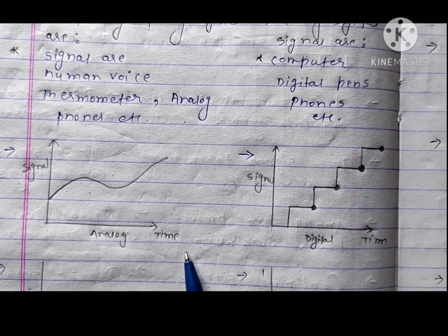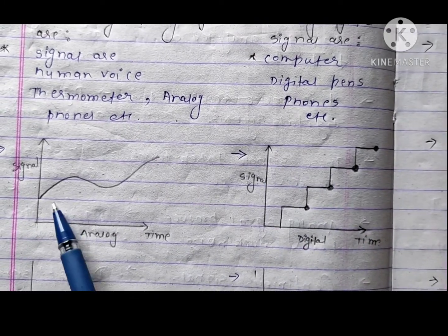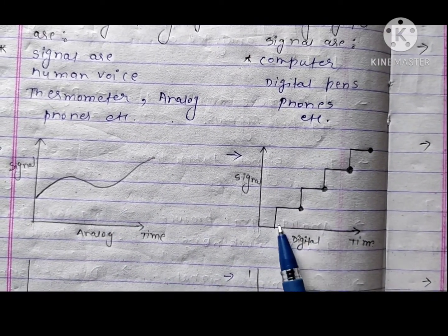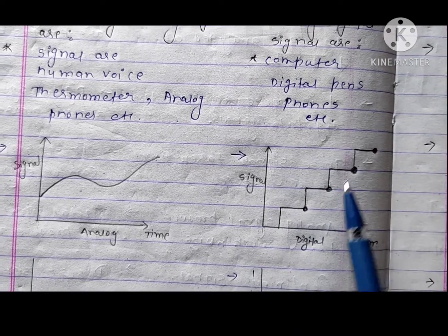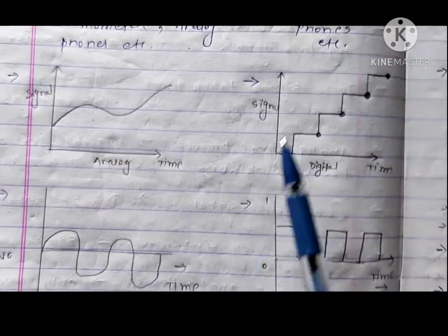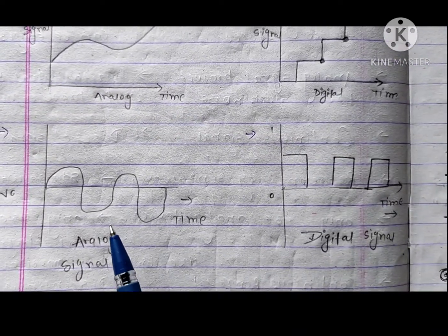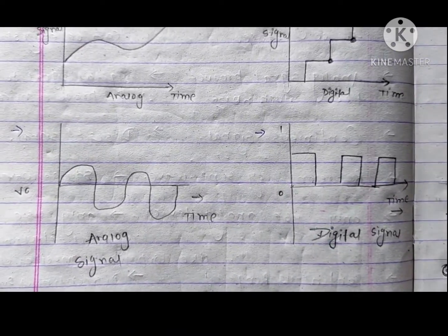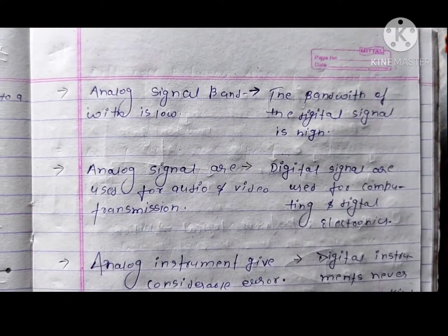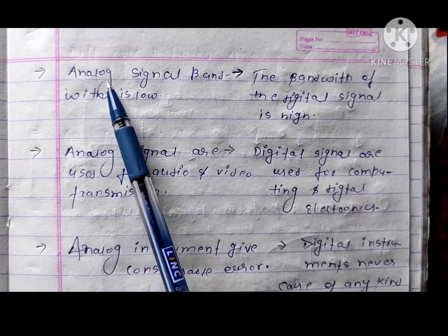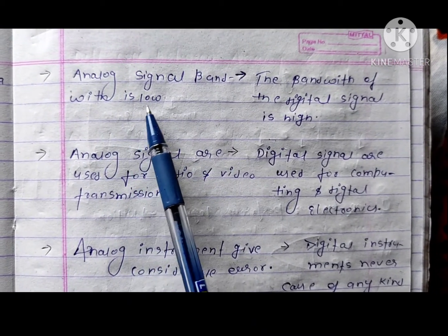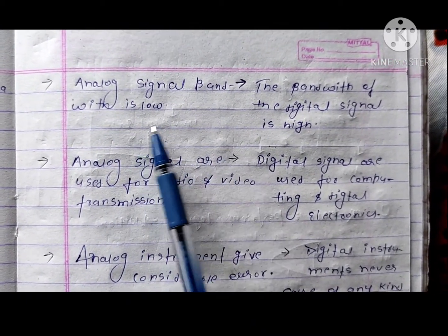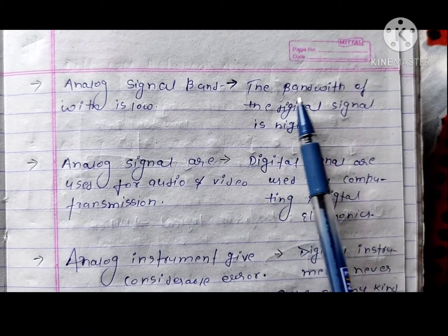This is the graph of analog signal — it shows a continuous wave over time. Digital signal shows a different type — a stepped or square wave. This is the next diagram comparing analog and digital signals. Analog signal bandwidth is low, but digital signal bandwidth is high.